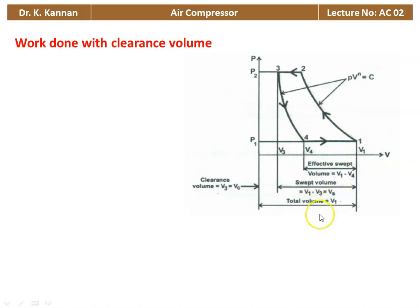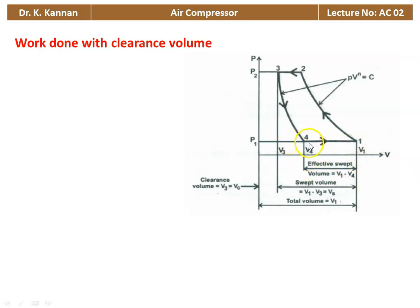The total volume of the cylinder is V1, that is VC plus Vs. During the suction stroke, the piston reciprocates from the top dead center to the bottom dead center. When point 4 is reached, the pressure inside the cylinder is lower than the atmospheric pressure, so air is drawn inside. The volume of air drawn inside will be V1 minus V4. At point 4, the pressure inside is lower than atmospheric, so the suction valve opens and air is drawn inside.